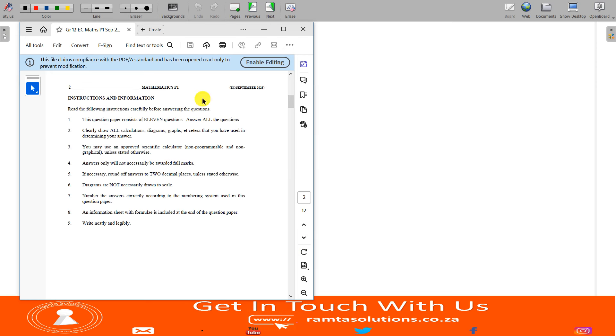And because this is an exam, let's look at some of the instructions that are relevant to us. Instruction number two says you must clearly show all calculations, diagrams, graphs, etc. that you have used in determining your answer. Instruction number four says answers only will not necessarily be awarded full marks. Last instruction is instruction five which says if necessary, round off answers to two decimal places unless stated otherwise. All nine instructions are important, however I want to remind you of these ones.